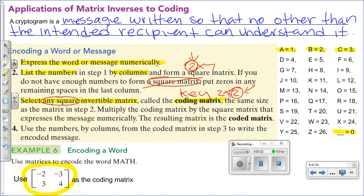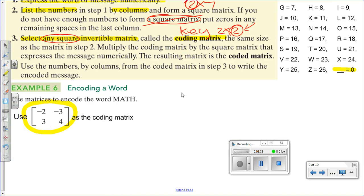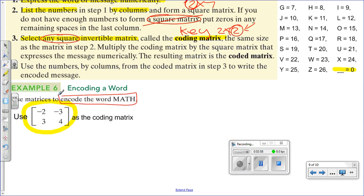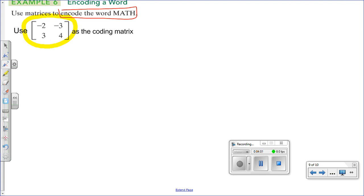Then you would use the numbers by columns from the coded matrix to write the encoded message. Basically what we're going to do is multiply the key, or coding matrix, times the message that we want to encode. When we're going to encode, here is the word MATH. Your favorite word, right? So what we're going to do is multiply the key, or the coding matrix, negative 2, negative 3, 3, and 4, times the message.